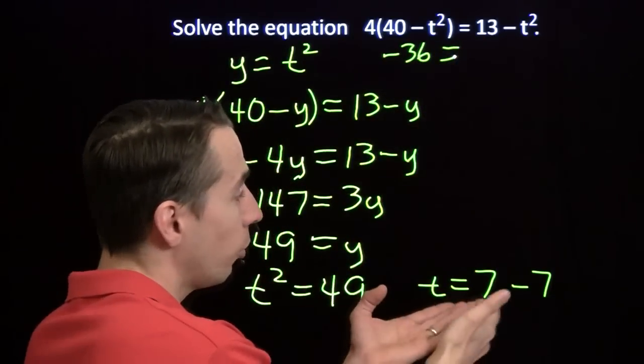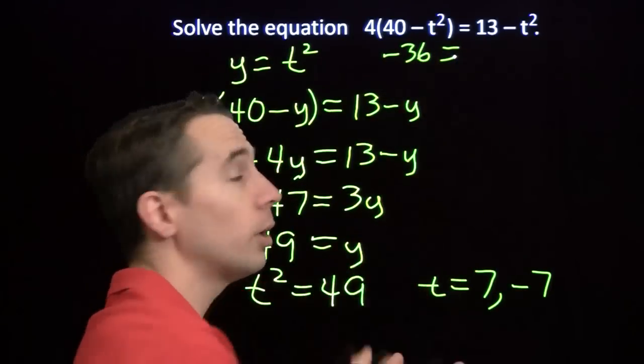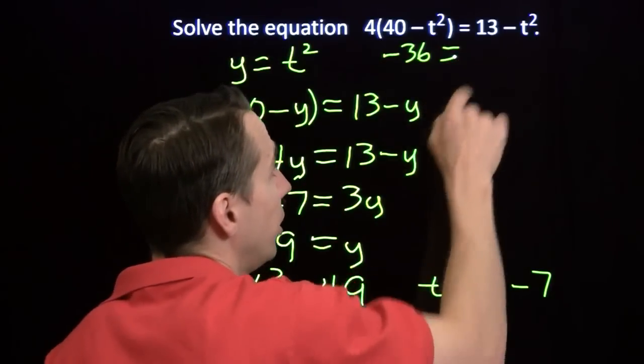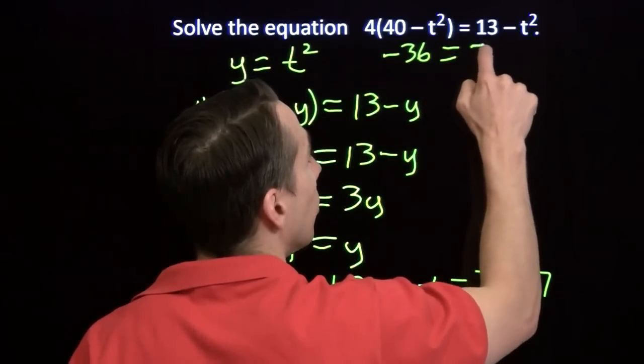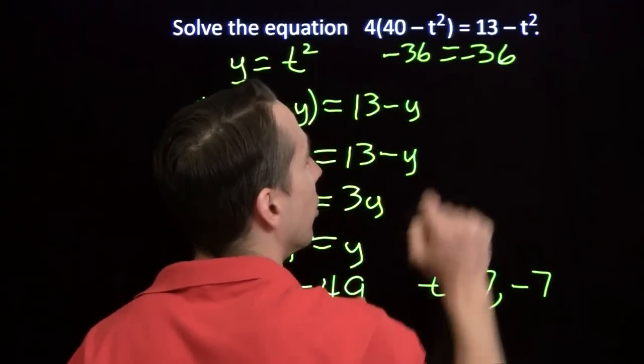Over here, we have 13 minus whichever one of these we put in here, when we square it, we're going to get 49. 13 minus 49, once again, negative 36.